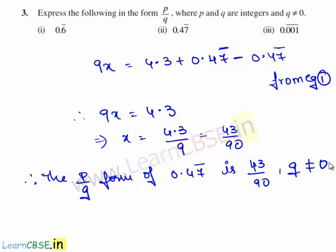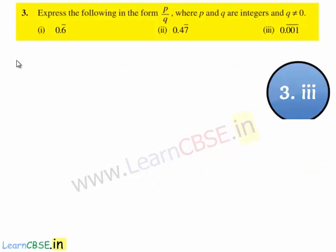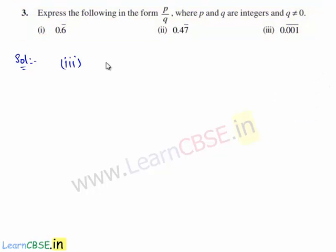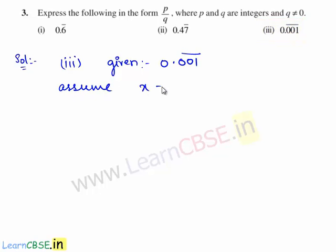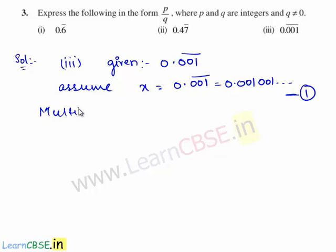Let us move on to the third bit of the question. The third decimal expansion given is 0.001 bar. We shall assume x is equal to 0.001 bar, which is equal to 0.001001 and so on. Consider this as equation 1. Since in the given decimal expansion three digits are repeating, we shall multiply equation 1 by 1000.